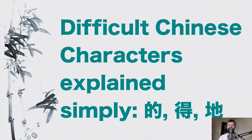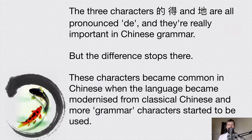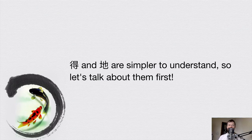Hi everybody and welcome back to another Chinese learning video. My name is Chris from fluentinmandarin.com. In this video I'm going to be talking about some difficult to understand Chinese characters, namely three characters that you might have seen before. They are very important in Chinese sentences and grammar. These three characters are all pronounced 'de' and they're not pronounced in any particular tone — they're always unstressed in a sentence.